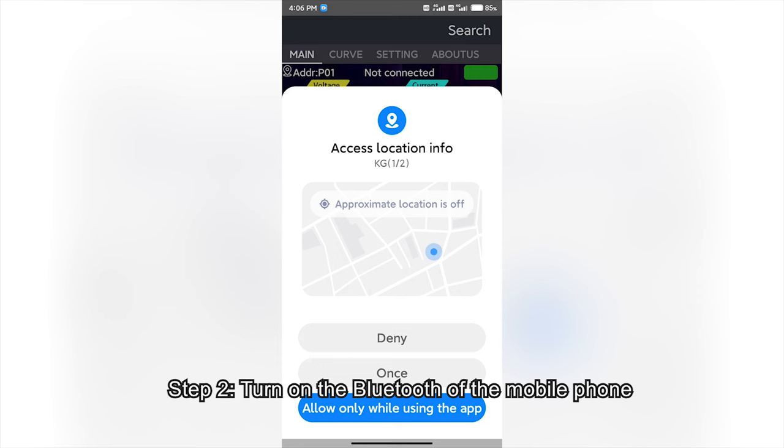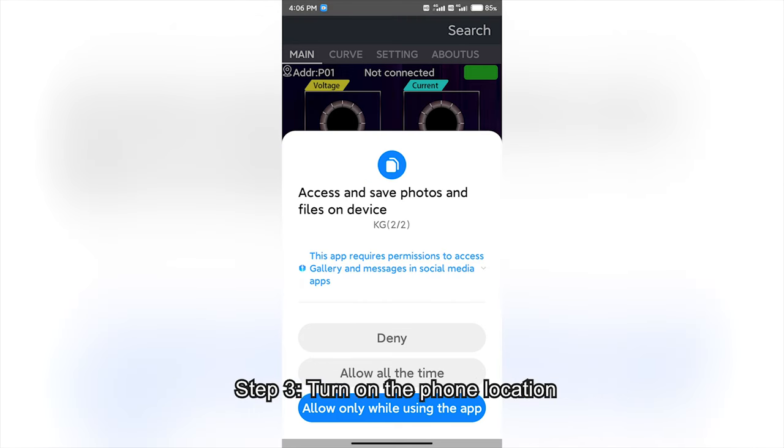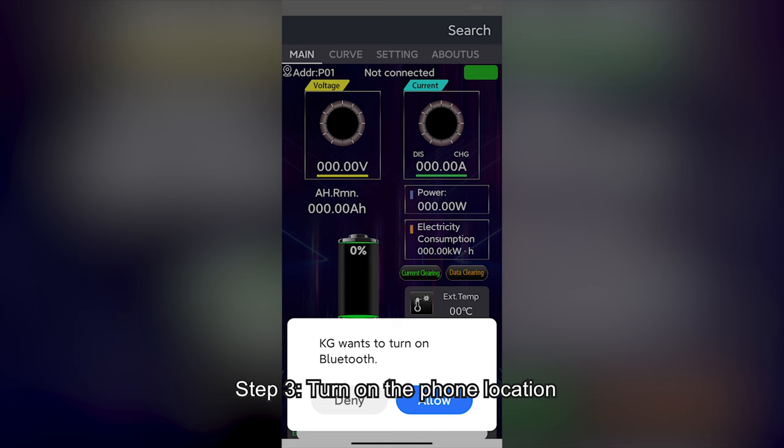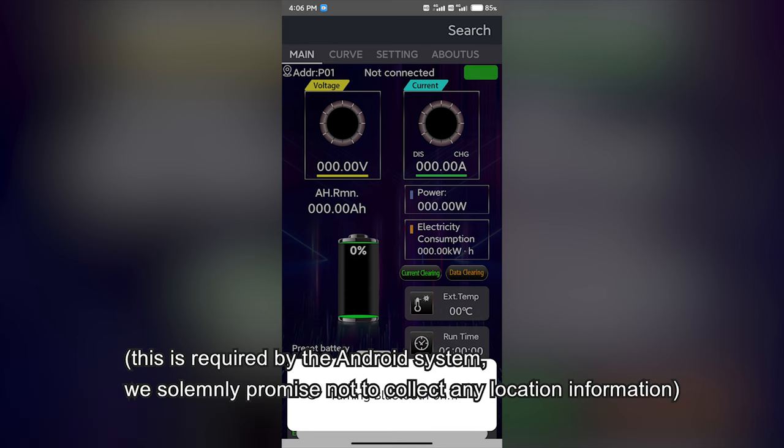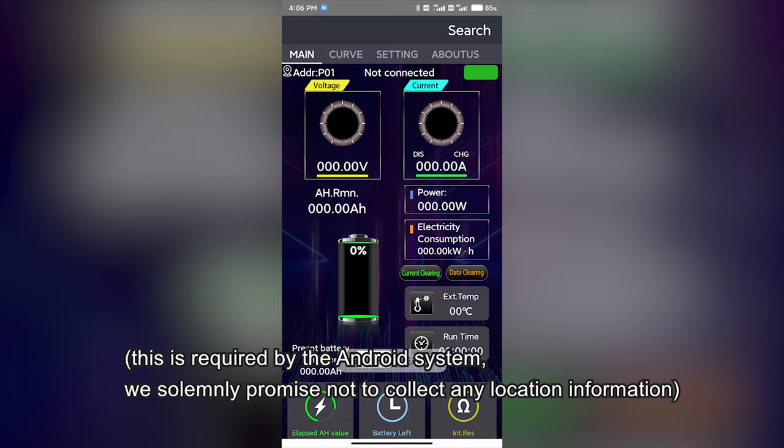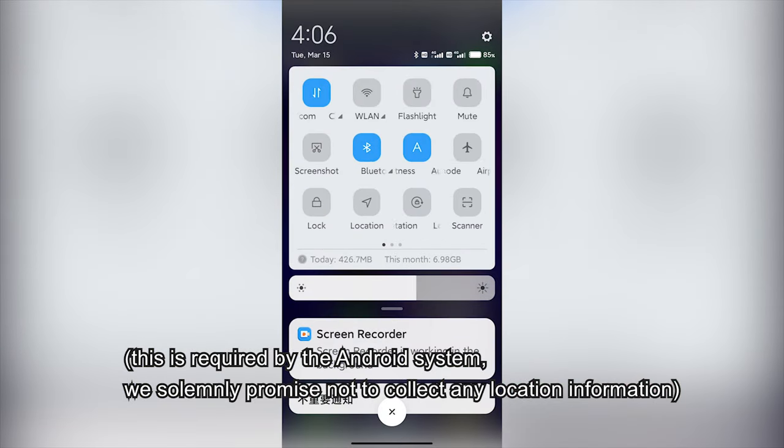Step 2: Turn on the Bluetooth of the mobile phone. Step 3: Turn on the phone location. This is required by the Android system. We solemnly promise not to collect any location information.